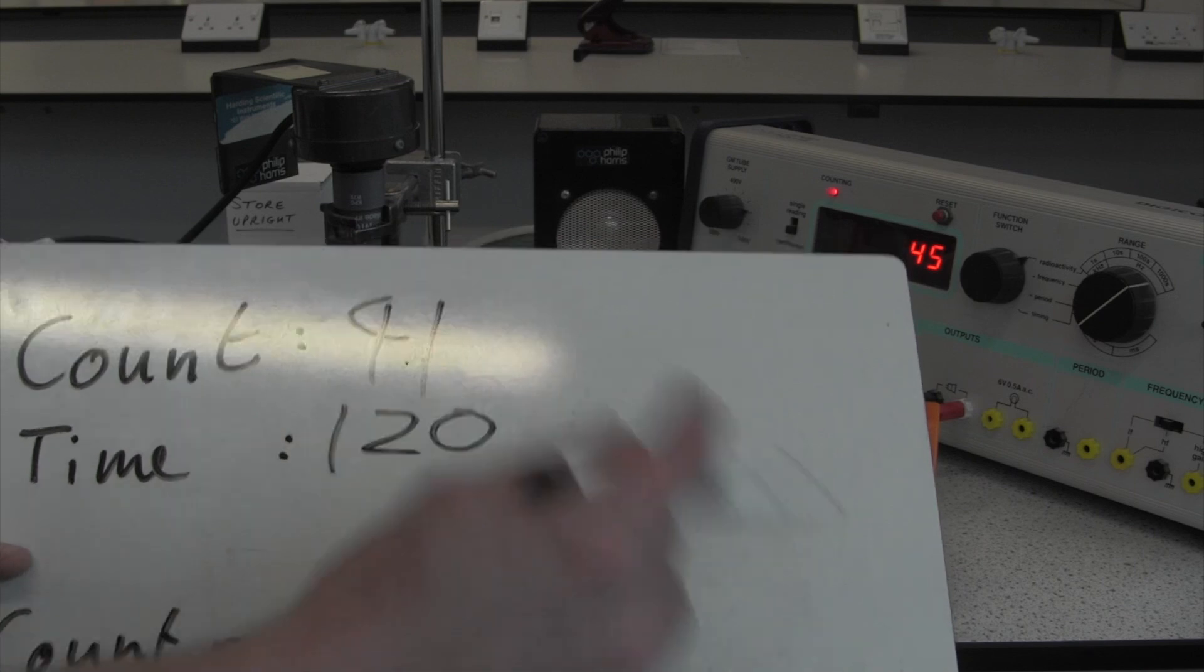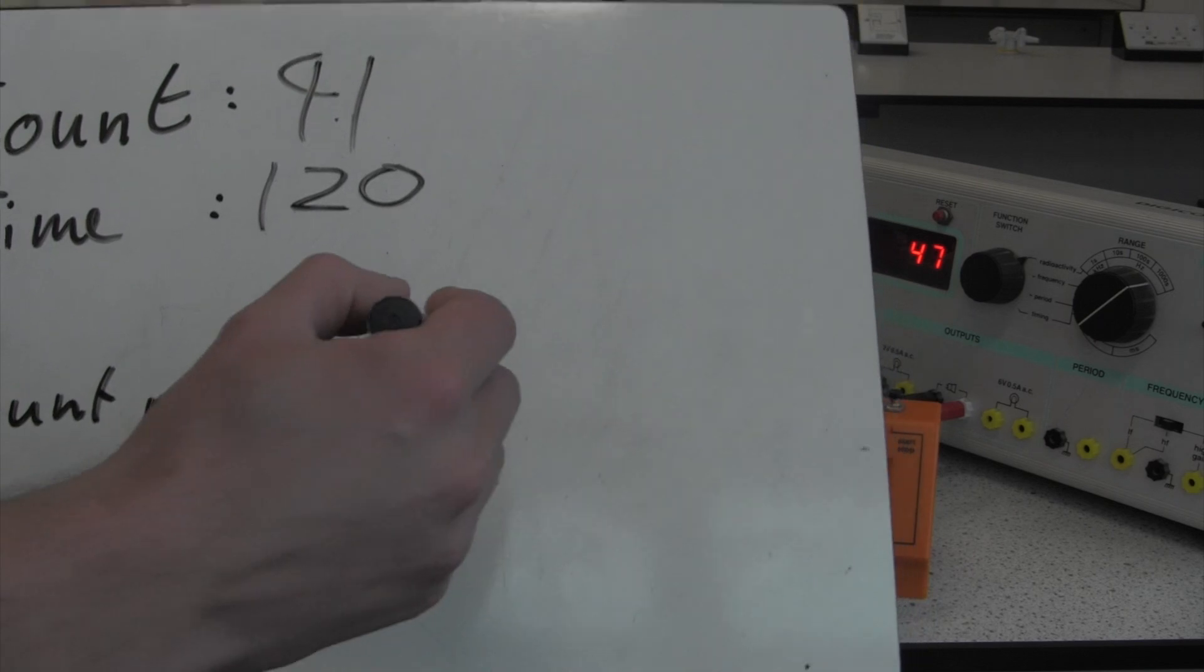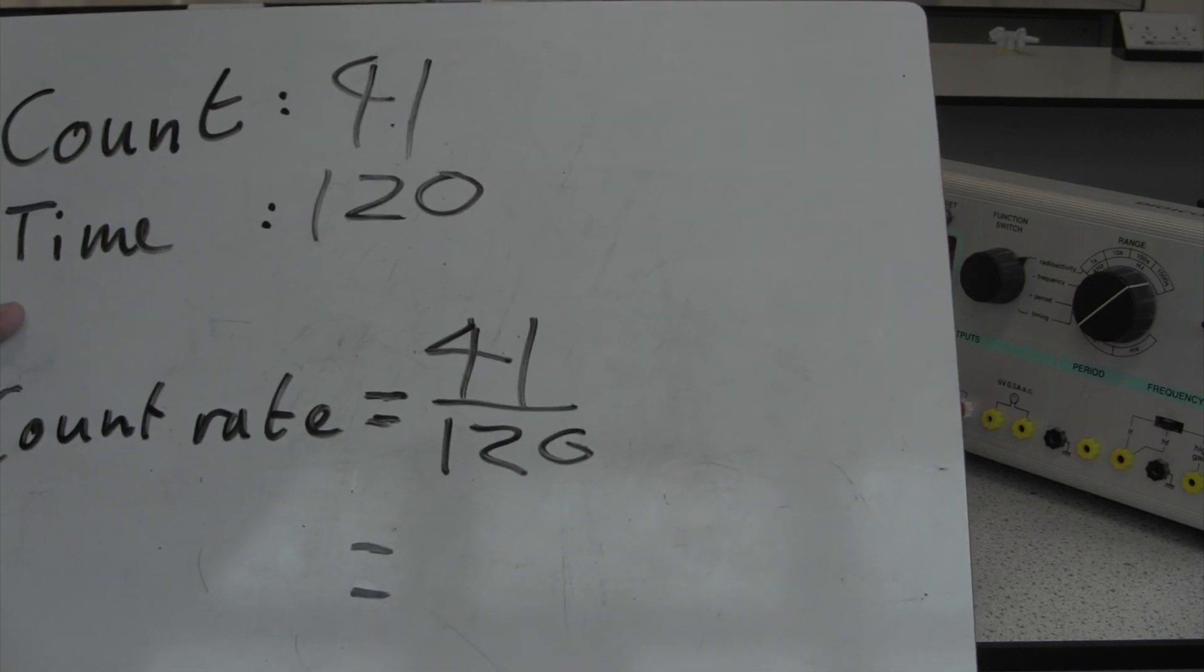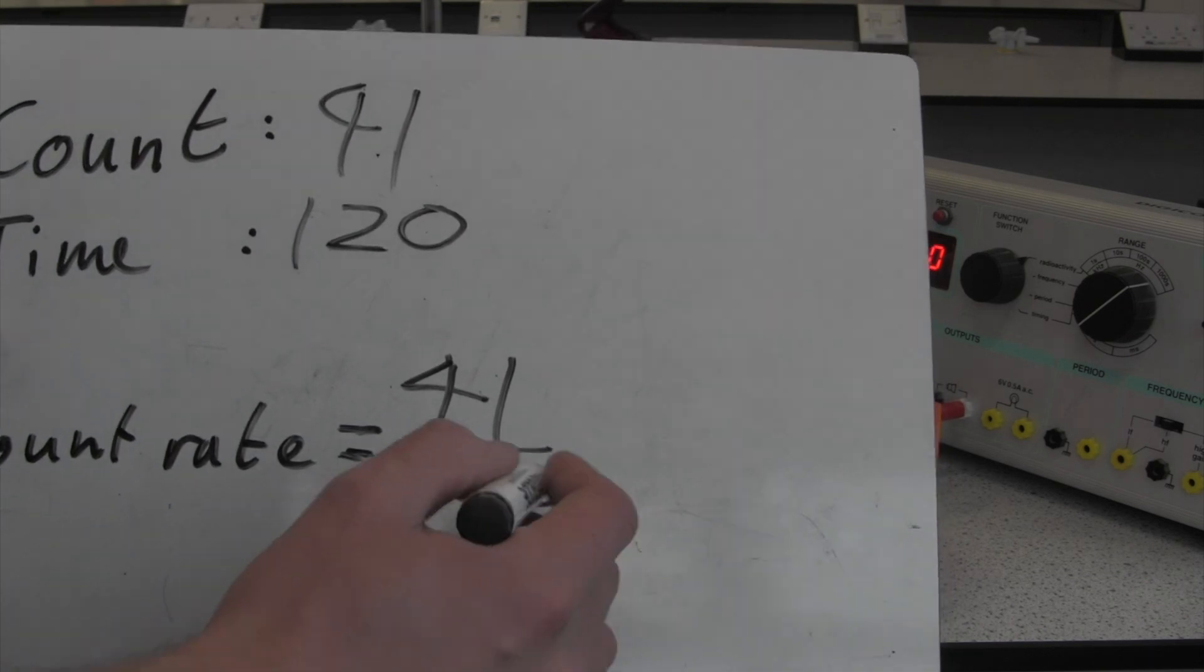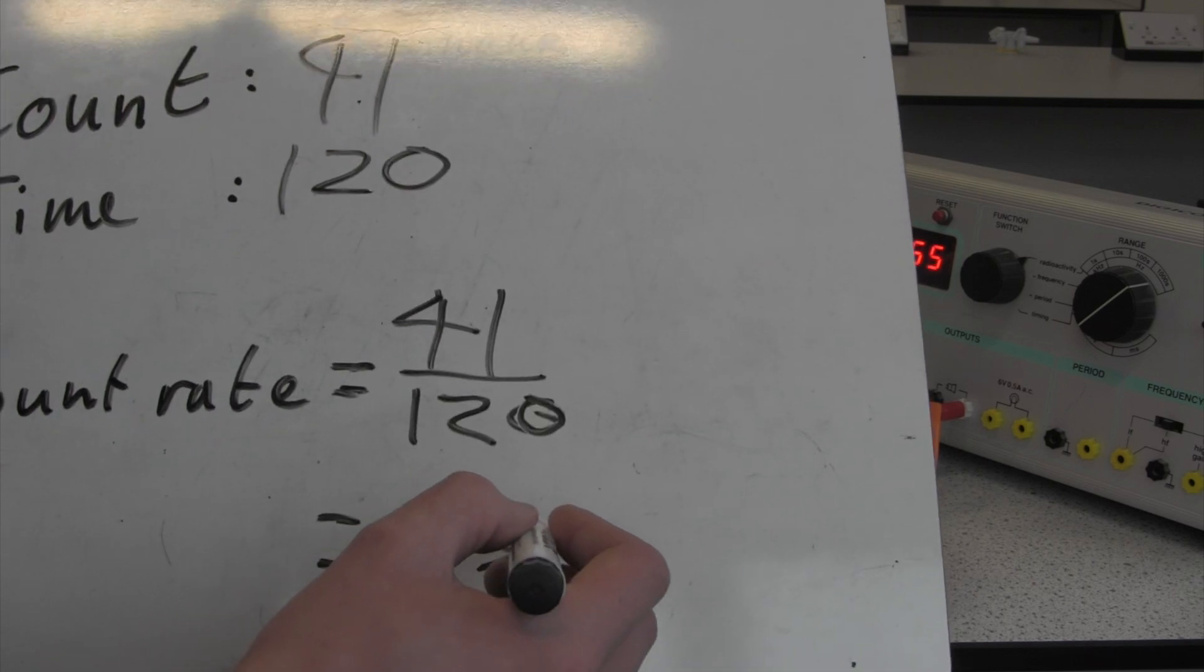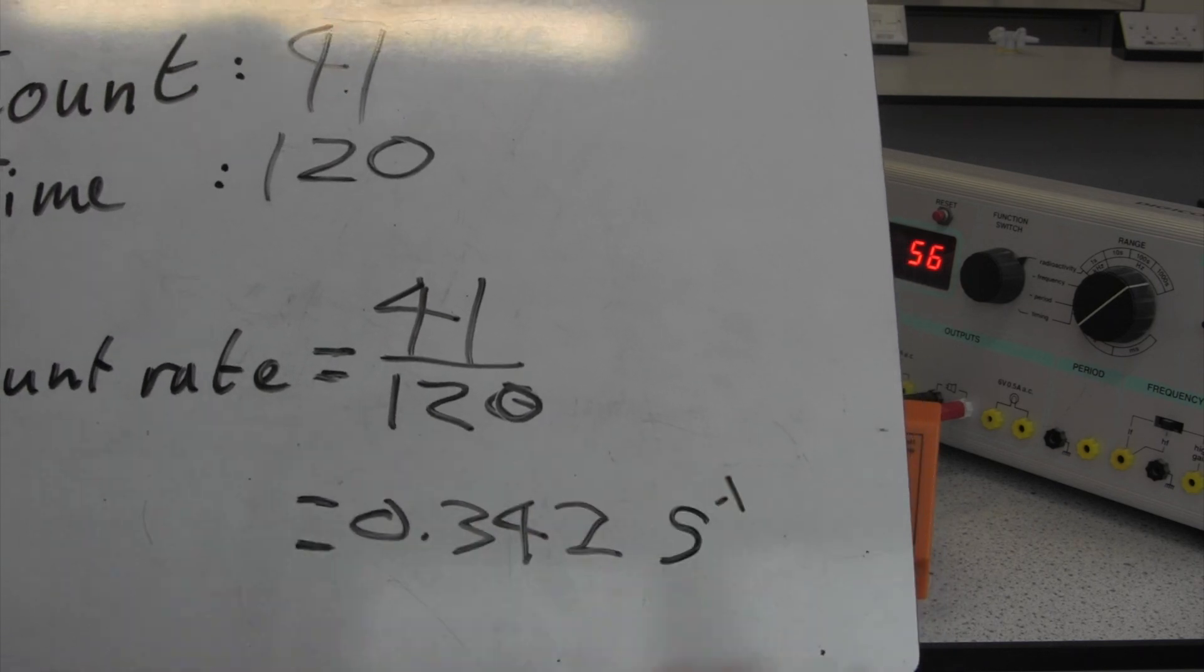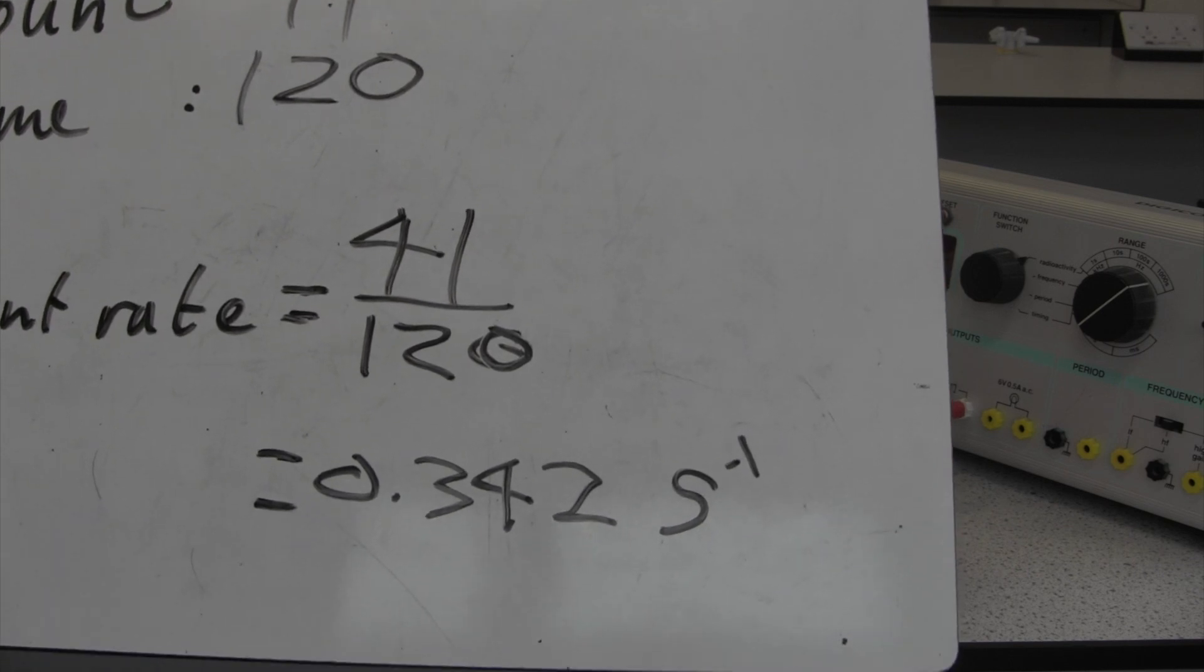So our count rate is 41 divided by 120, which is 0.342 counts per second over that period. So this is giving us our background radiation count.